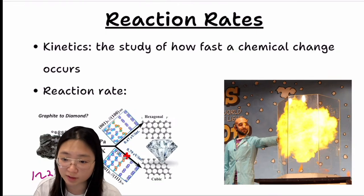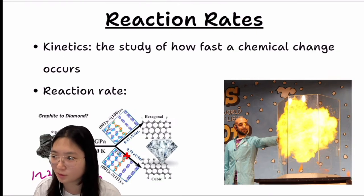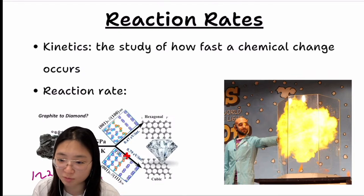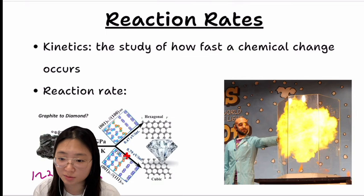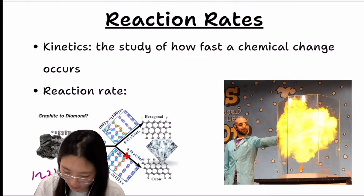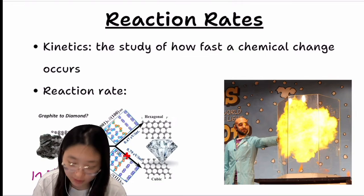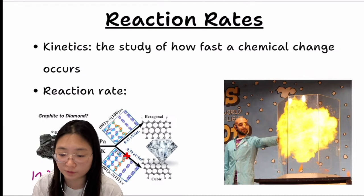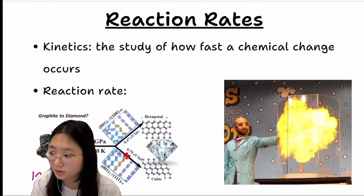It's just irrelevant to our life. The average lifespan for human beings is like 80 or 90 years, and this takes 1 billion years — it doesn't really matter to us. So that's why we need to study the reaction rate and the reaction rate of different reactions.